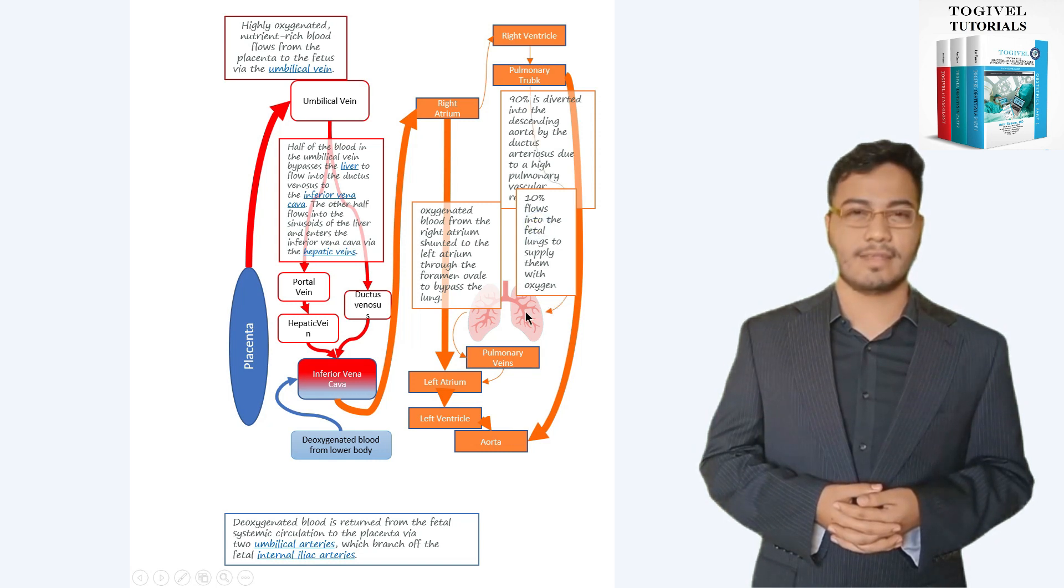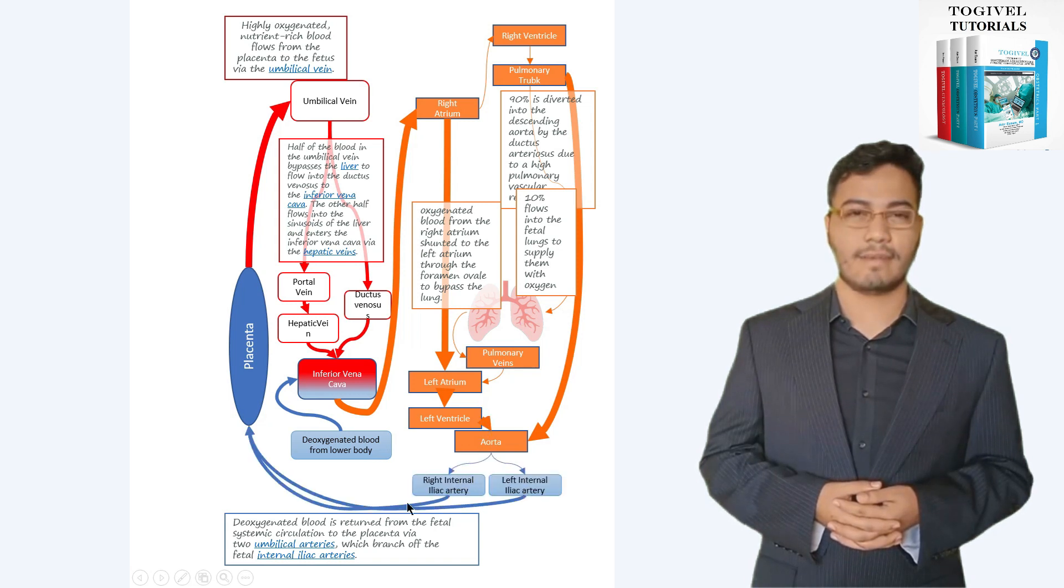Blood returns to the placenta through the two hypogastric arteries, which distally become the umbilical arteries. In the placenta, this blood picks up oxygen and other nutrients and is recirculated to the umbilical vein.